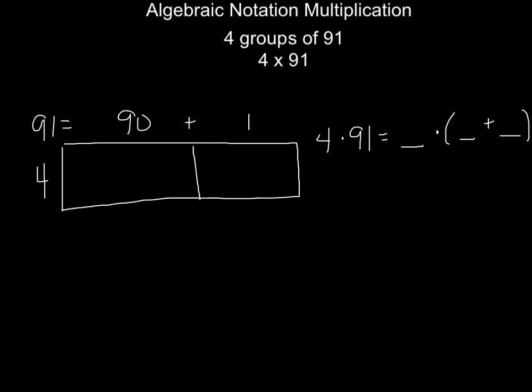You can use place value sections if you like that area model and you like being able to visualize the multiplication that way. You can use expanded notation, or you can try what we're going to try today, algebraic notation multiplication. And we're going to use a sample problem of 4 groups of 91, or 4 times 91.